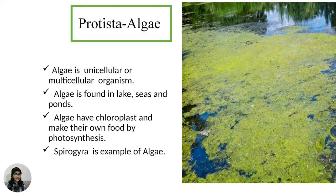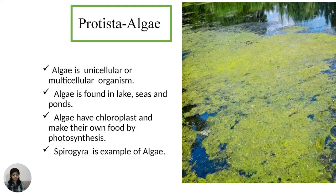Second, algae: Algae are unicellular or multicellular organisms found in lakes, seas, and ponds. Algae have chloroplasts and can make their own food by photosynthesis. Spirogyra is an example of algae.